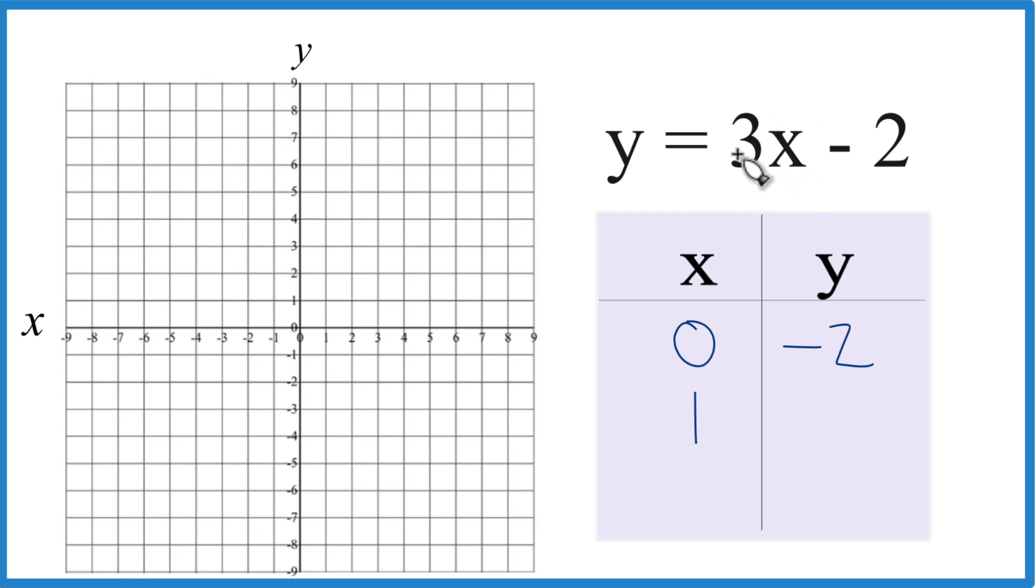How about we put 1 in? 3 times 1 is 3 minus 2, that gives us 1. And how about we put 2 in? 3 times 2 is 6, 6 minus 2, that's 4.